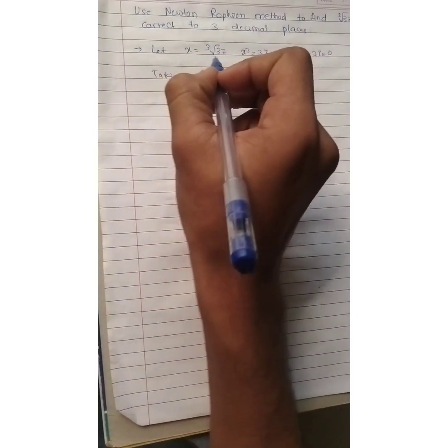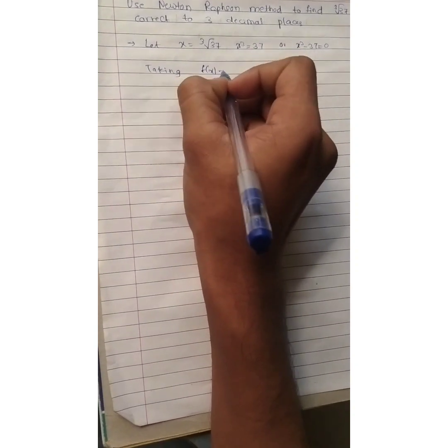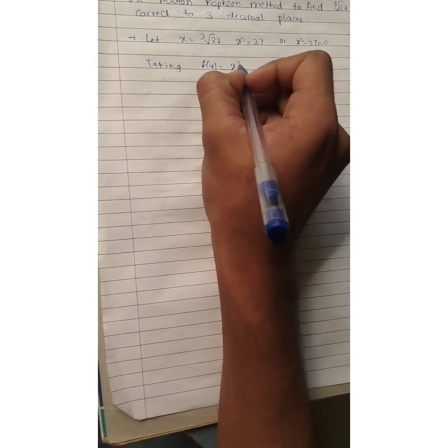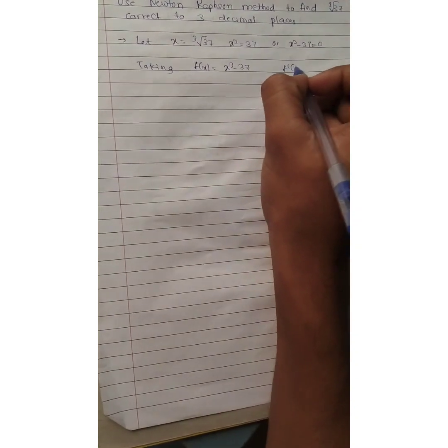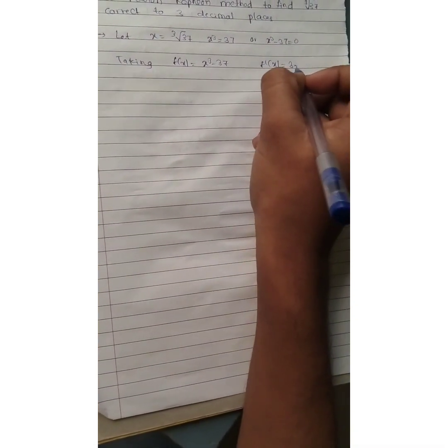So, taking f of x, let us consider f of x is equal to x cube minus 37. When you differentiate this, f dash of x is equal to 3x square.